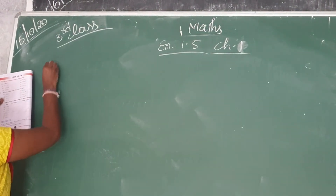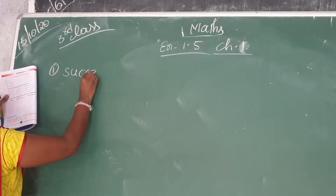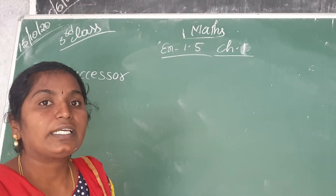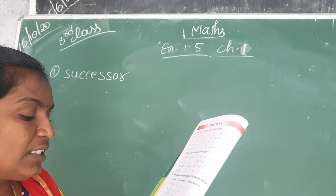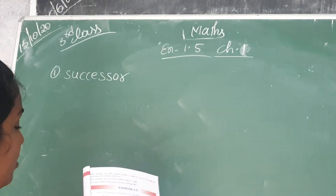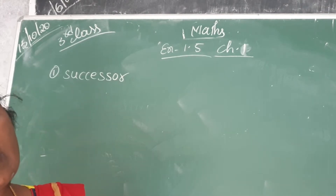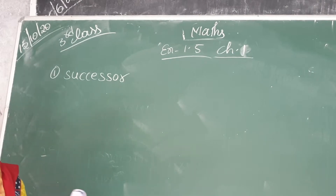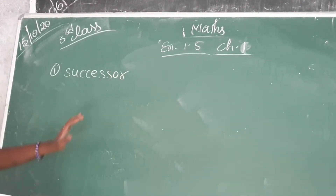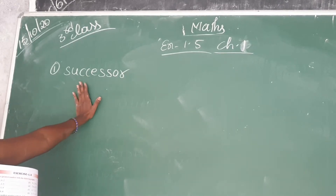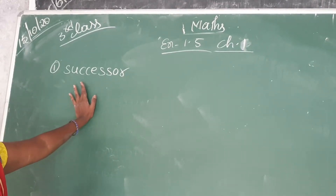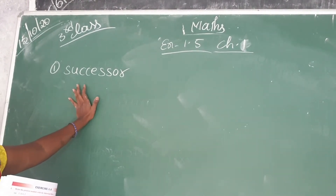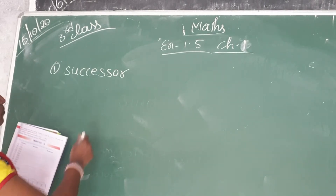First, we have to know what a successor is. The number just after another number is called its successor. To obtain the successor of a number, add 1 to the given number, and then we will get the successor of that number. Understood, children?